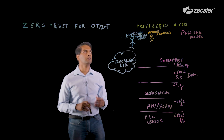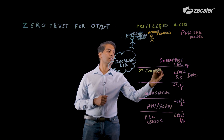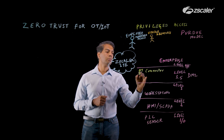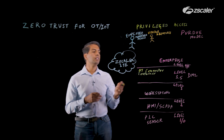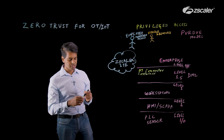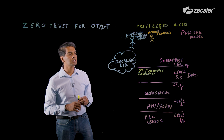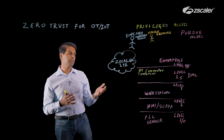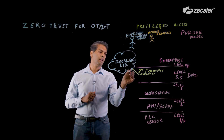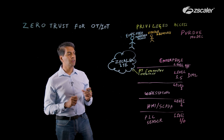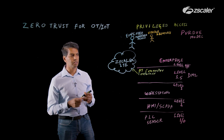Our Zscaler solution for privileged access requires what we call an OT connector deployed at the DMZ layer. This connector is available as a container, primarily because when you go into these environments you won't have a lot of infrastructure to deploy it as VMs, and today many industrial edge devices support Docker container form factors. When remote access needs to happen, the OT connector deployed at the DMZ layer connects to the Zscaler cloud via a simple outbound connection — the only firewall rule needed is outbound to the Zscaler cloud.